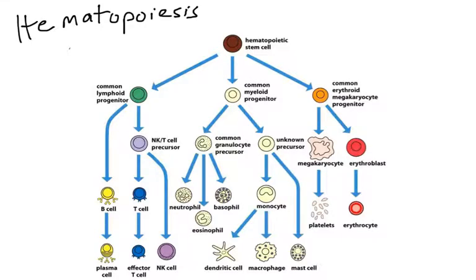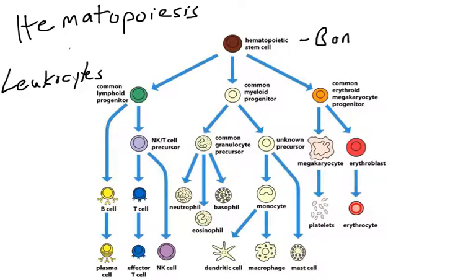Let's review the process of hematopoiesis. Hematopoiesis refers to the production of blood cells, both red blood cells and white blood cells. This occurs in the bone marrow, specifically the red bone marrow.